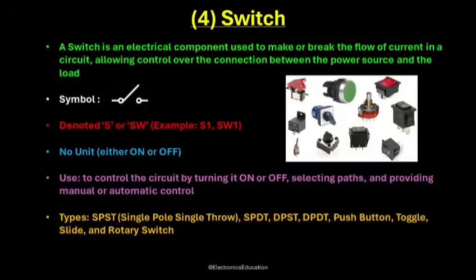The main purpose of a switch is to control the circuit — it can turn a device on or off, select between two different paths, or even automate the process. You'll find switches everywhere, from simple light switches in homes to complex control panels in machines. The most common type is the SPST, or single pole single throw, which simply connects or disconnects a single circuit. Next is the SPDT, or single pole double throw, which connects one input to two different outputs. Then comes DPST, or double pole single throw, which controls two separate circuits at once. And finally, DPDT, or double pole double throw, which can route two circuits in two directions.